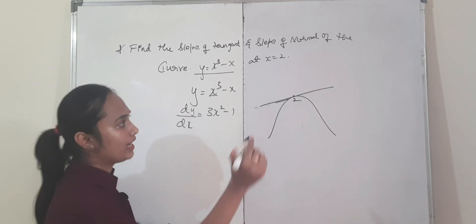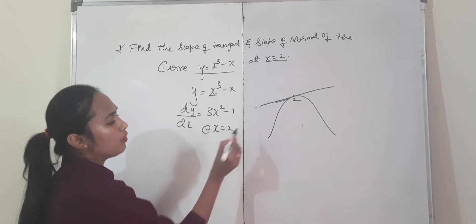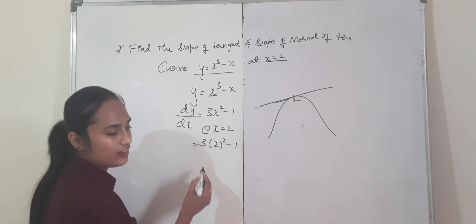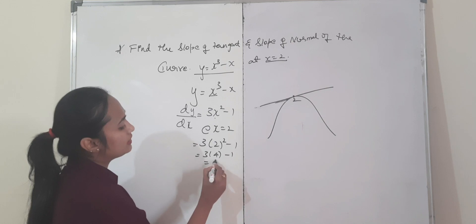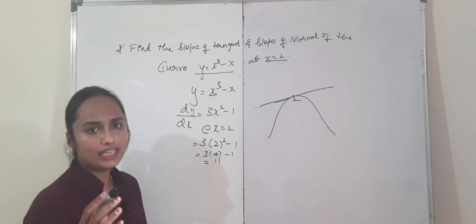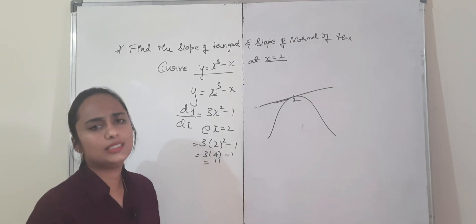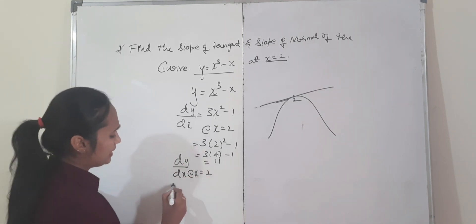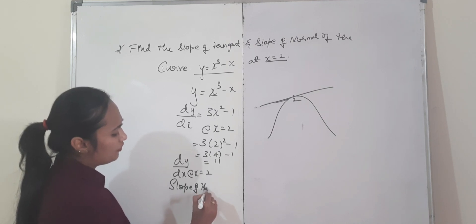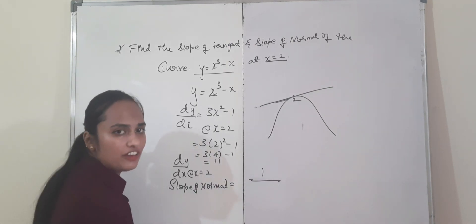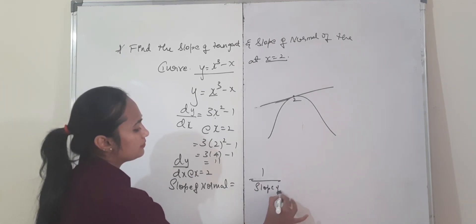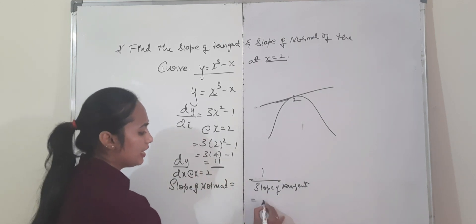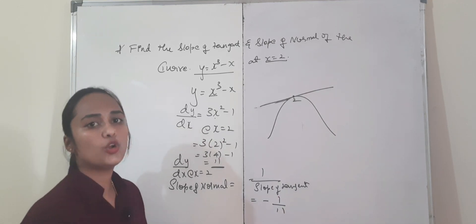This dy/dx is the slope. At the point x = 2, substitute x = 2: 3(2²) − 1 = 3(4) − 1 = 12 − 1 = 11. So slope of tangent at x = 2 is 11. Slope of normal = −1 divided by slope of tangent = −1/11. Very simple.